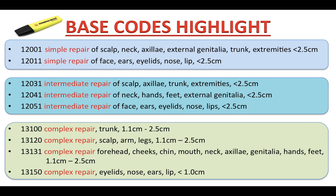This slide highlights the base codes to mark in your CPT book. To prepare for the coding exam, pause the video, get your CPT book, highlight these base codes, and tab the page to save time. First, highlight code 12001: simple repair of scalp, neck, axilla, external genitalia, trunk, and extremity, 2.5 cm or less. Then highlight code 12011: simple repair of face, ears, eyelids, nose, and lips, less than 2.5 cm.